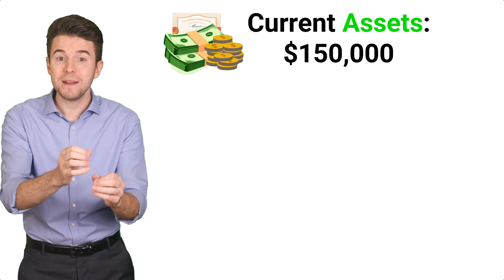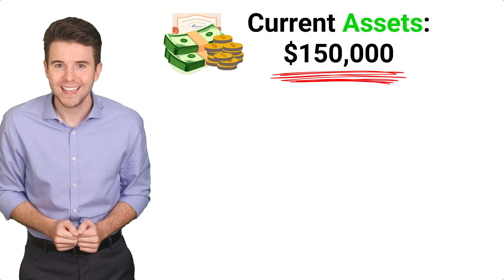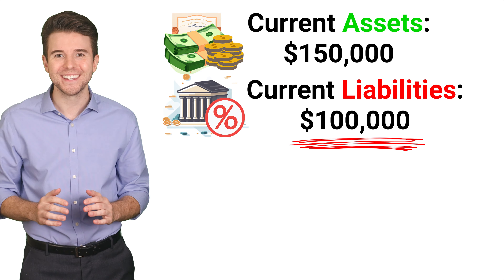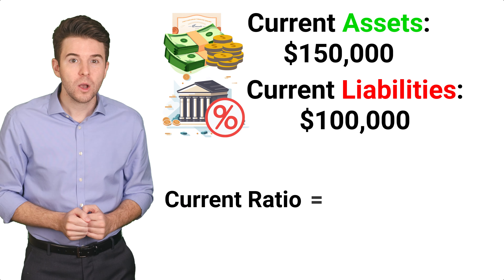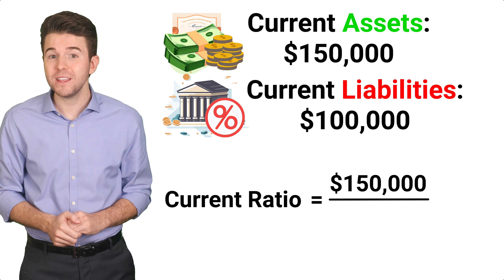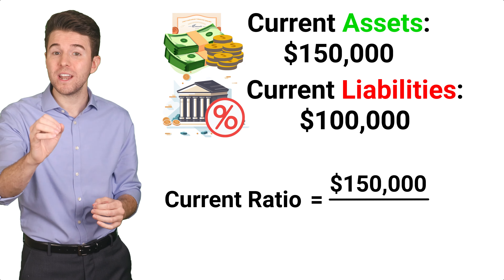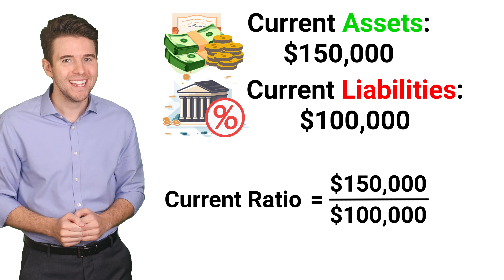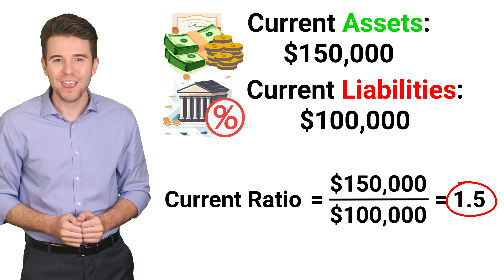Let's jump into an example. Let's say a company has current assets totaling $150,000, and its current liabilities stand at $100,000. To determine the current ratio, we would take the $150,000 of current assets and divide it by the $100,000 of current liabilities. That gives us a current ratio of 1.5.